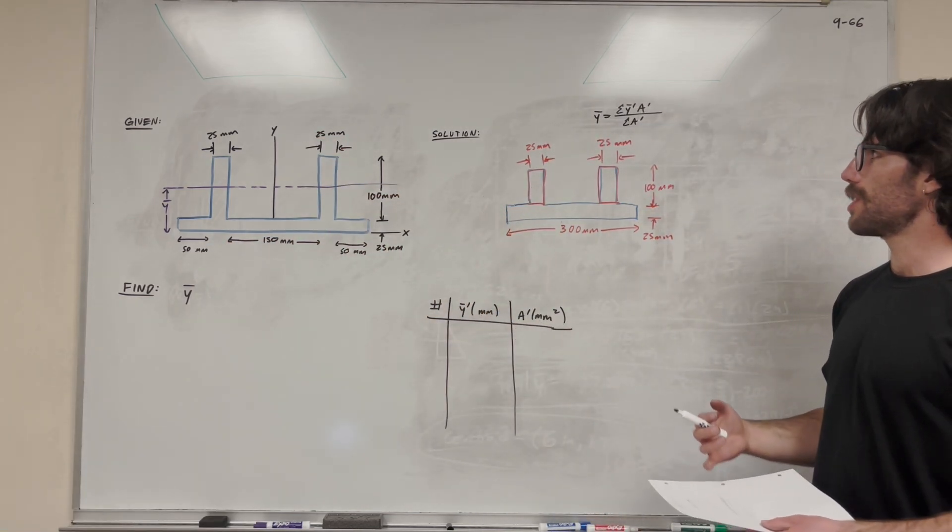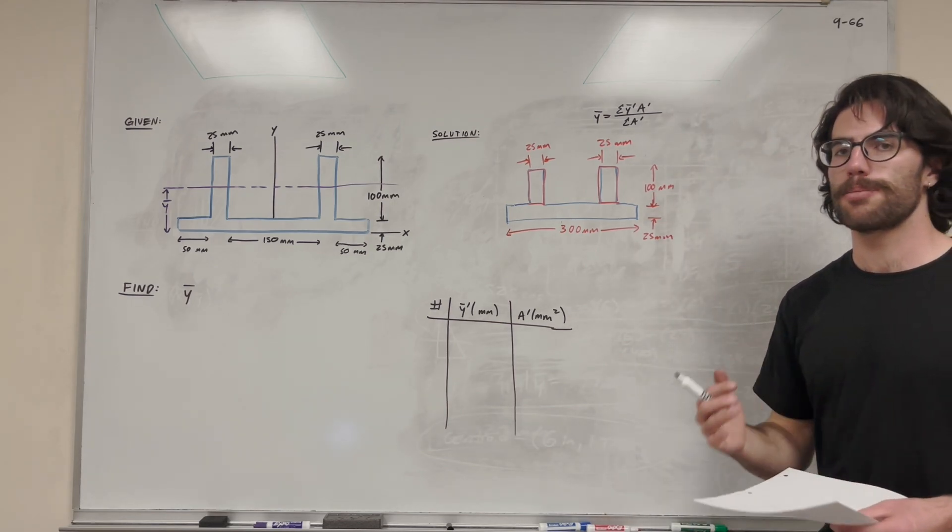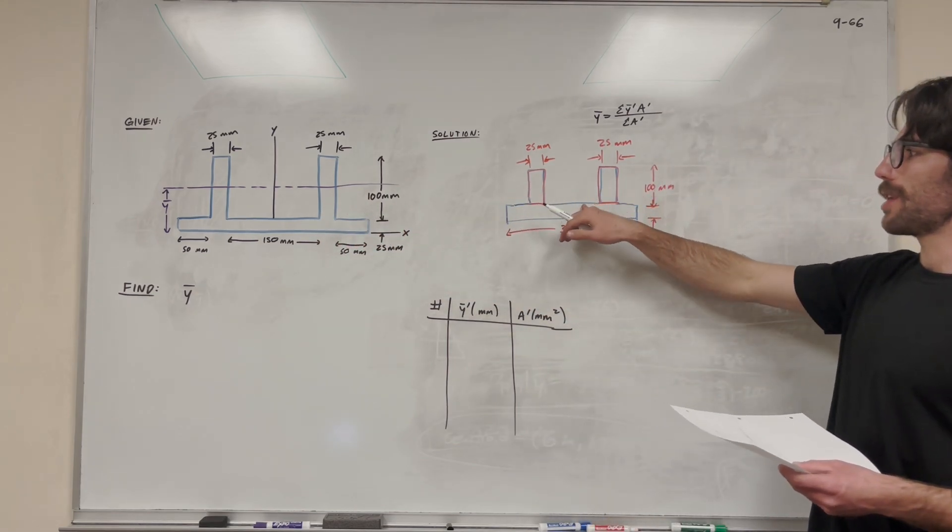Basically what we want to do when we're using our center of mass equation is break it up into as simple of shapes as possible. This is a confusing shape, but we can break it up into three simple shapes.